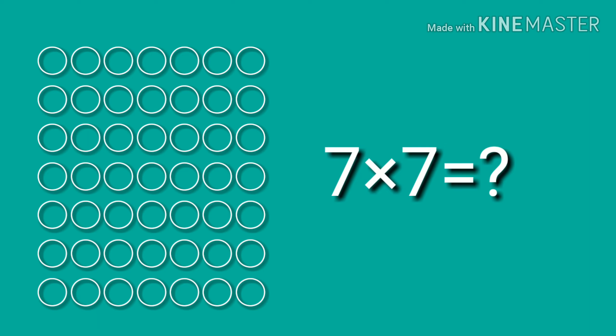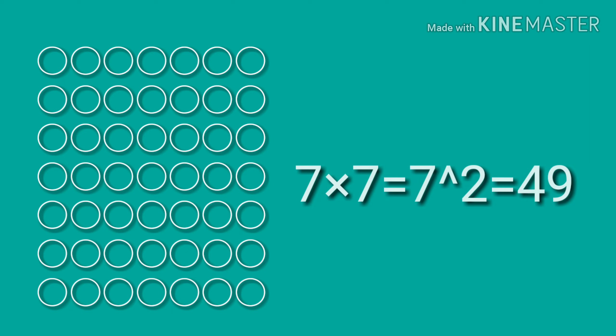7 into 7 is equal to? Can you find the answer? 7 into 7 is equal to 7 power 2, which equals 49.